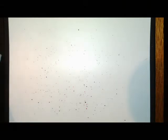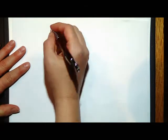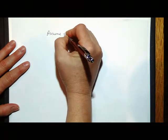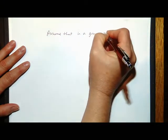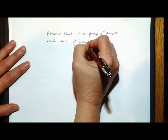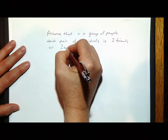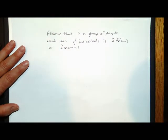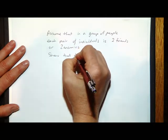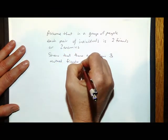Now we're going to do a problem that is part of a common approach called Ramsey theory. We're not going to cover all of Ramsey theory or even give a full definition, but Ramsey theory is about the distribution of subsets of elements of sets. The problem is: assume that in a group of people, each pair of individuals is either two friends or two enemies.